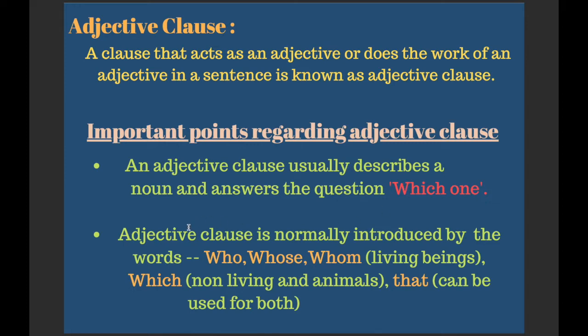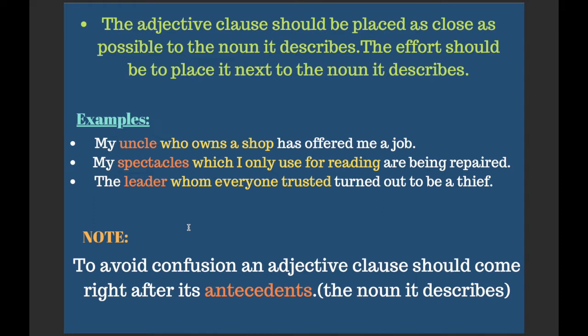The second point: an adjective clause is normally introduced by the words 'who,' 'whose,' and 'whom' for living beings; 'which' for non-living things and animals; and 'that,' which can be used for both. The third and most important point: the adjective clause should be placed as close as possible to the noun it describes — ideally right next to it.